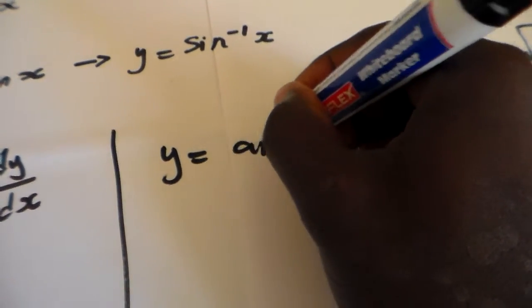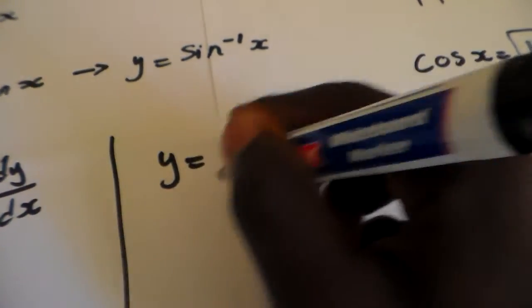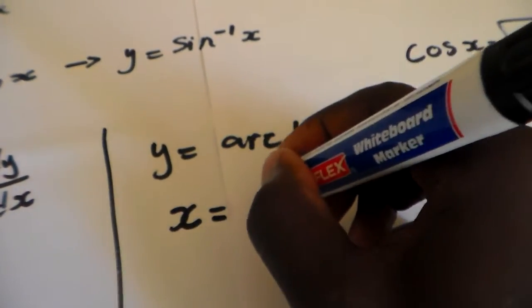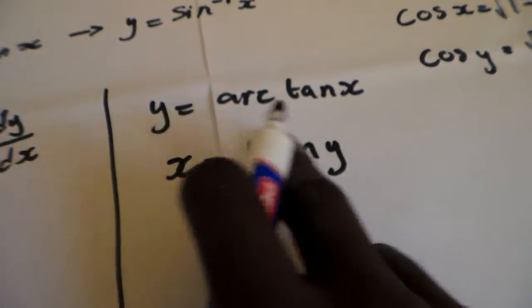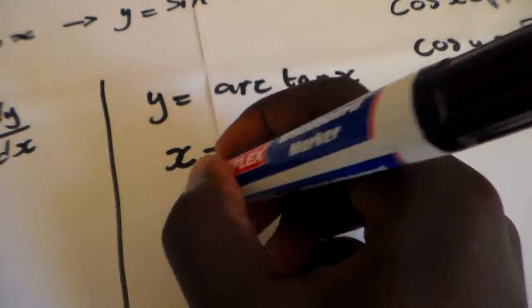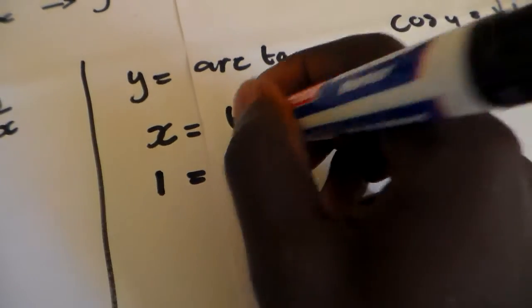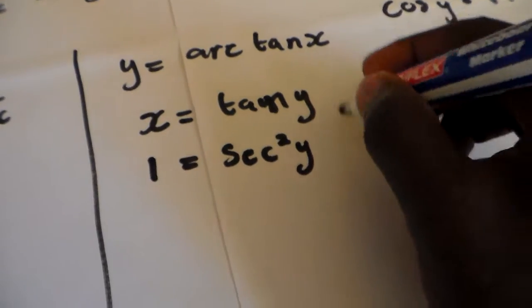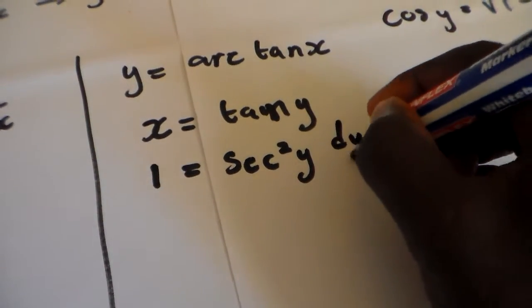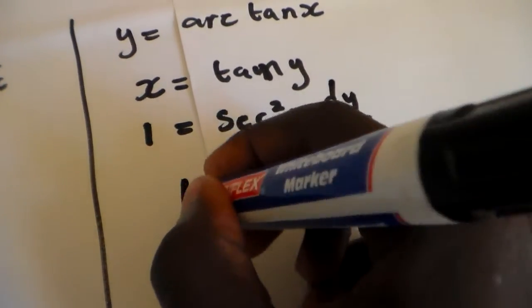When deriving the inverse of arctan, we're going to do the same thing. We say y is equal to arctan x, then we swap both values to get x is equal to tan y. Then we derive both sides: derivative of x equals 1, and the derivative of tan y is equal to sec²y.